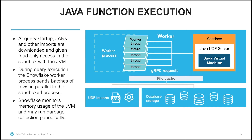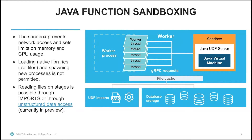Let's look at how Java functions execute. At query startup, we copy jars and other imports from the stage to the warehouse nodes, and we give them read-only access in the sandbox to the JVM. During query execution, each Snowflake worker process sends batches of rows in parallel to the sandbox process. Snowflake monitors memory usage of the JVM and may run garbage collection periodically to clean up loose objects. Snowflake executes Java functions within a sandbox.